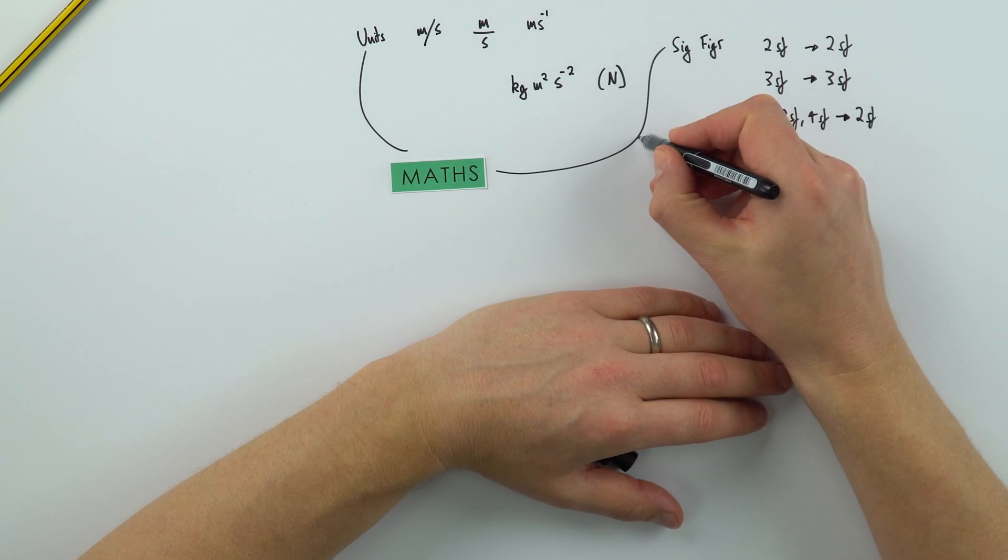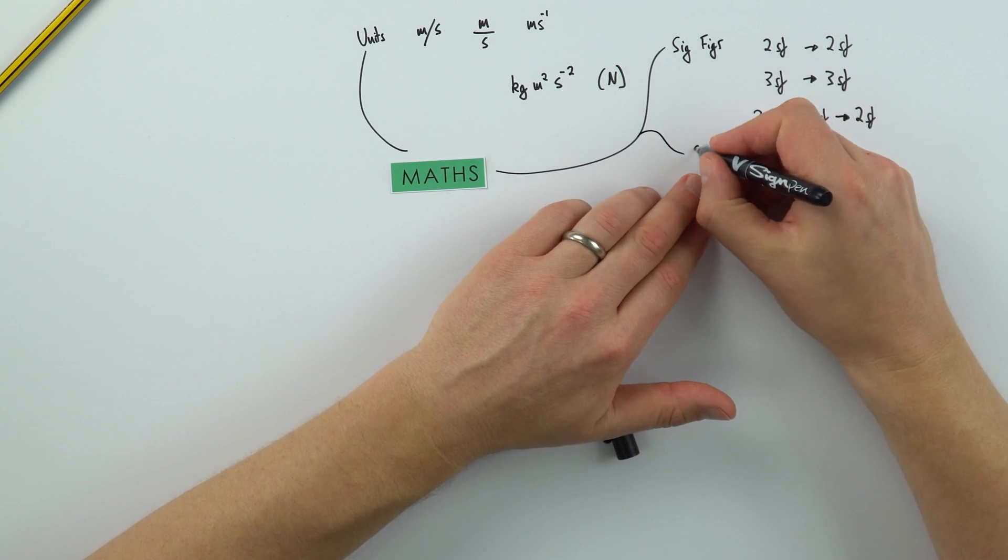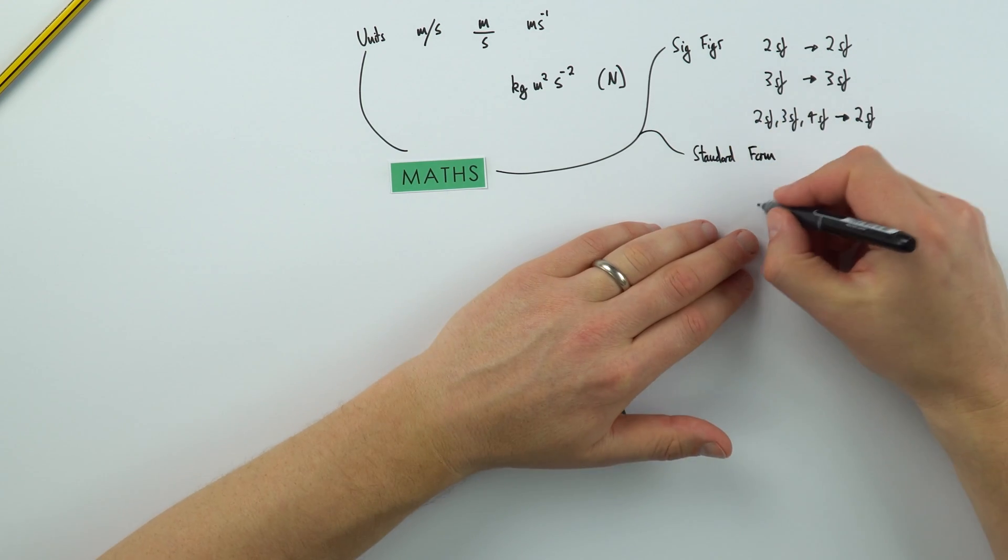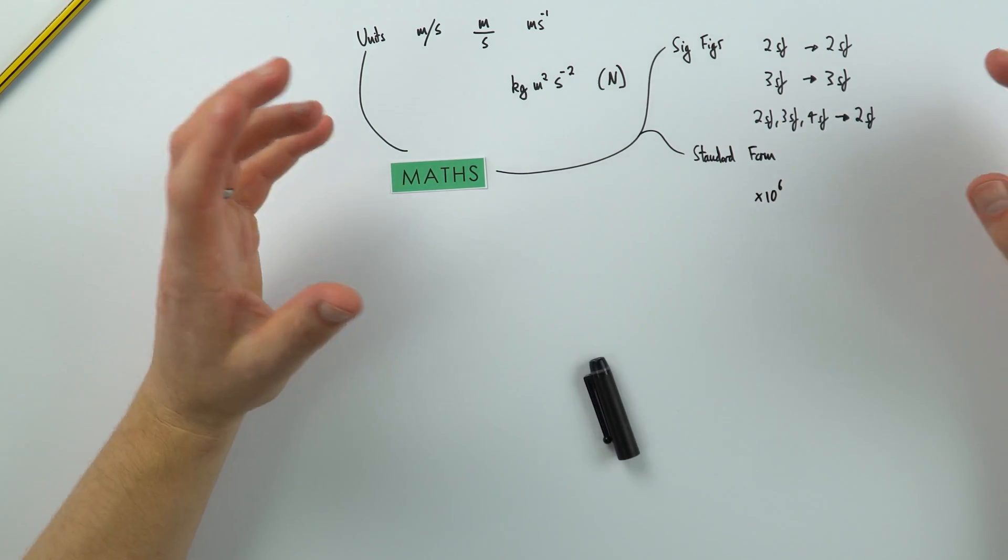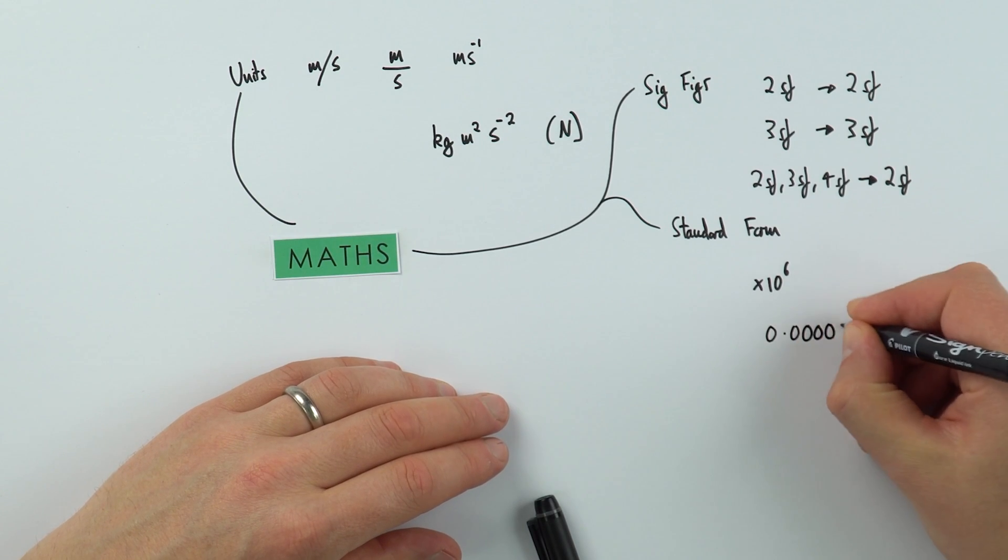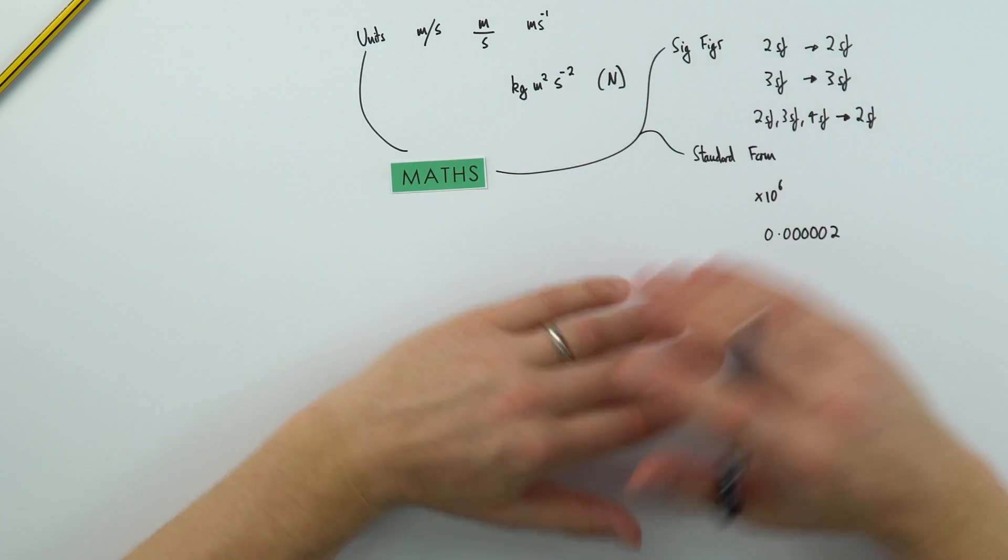And when it also comes to giving your final answer, standard form is really important. And what we mean there is maybe something times 10 to the 6 or times 10 to the 2. And this is because, especially at A-level, we do lots and lots of stuff with really small numbers, perhaps when we're looking at inside the atom, the atomic physics, or even really, really big numbers, maybe when we're looking at gravitational fields. So we're going from the really small to the really big. And you can't just write down something like 0.0000002. That's just not good physics. It's a lot better to give it in standard form. And ultimately, that means you're not going to make as many mistakes with any data that you might have. So standard form is really important.